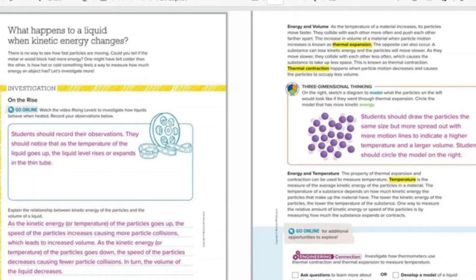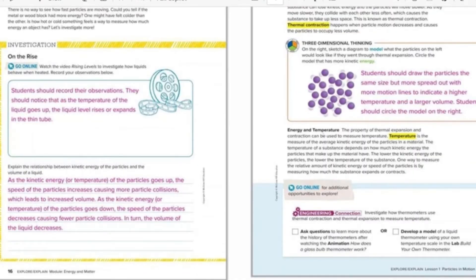When a material becomes very cold, there is thermal contraction. The property of thermal expansion and contraction can be used to measure temperature — how hot or cold something is. Temperature is the measure of the average kinetic energy of the particles in a material. The particles in a liquid can move (haraka); they have kinetic energy. So temperature measures the average kinetic energy.